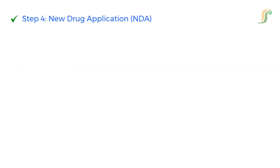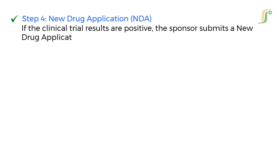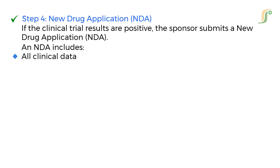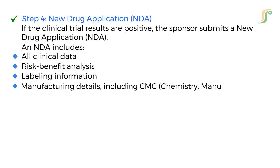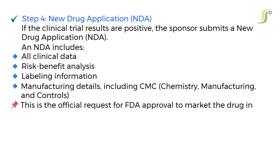Step 4: New Drug Application (NDA). If the clinical trial results are positive, the sponsor submits a New Drug Application (NDA). An NDA includes all clinical data, risk-benefit analysis, labeling information, and manufacturing details including CMC — chemistry, manufacturing, and controls. This is the official request for FDA approval to market the drug in the United States.